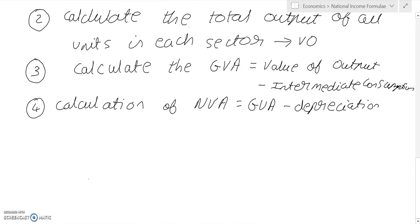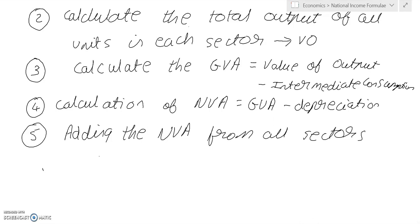The step after that would involve adding the NVA from all sectors, and we get the summation of NVA, which is NDP at MP.